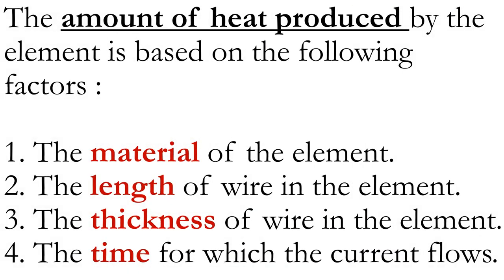The amount of heat produced by the element is based on the following factors. Number one, the material of the element. Number two, the length of the wire in the element. Number three, the thickness of the wire in the element. Number four, the time for which the current flows. All these factors are very important for choosing the type of element for a particular device.